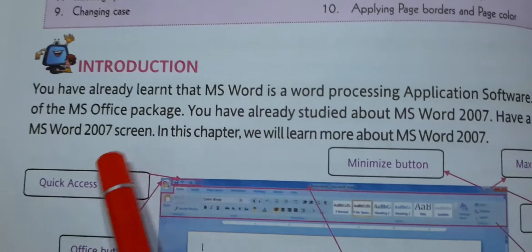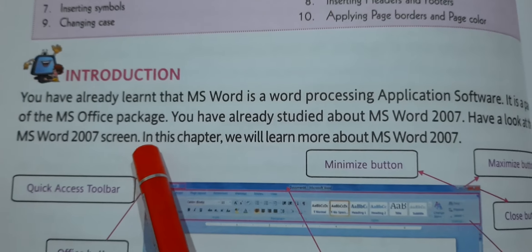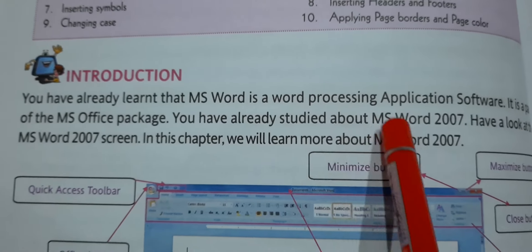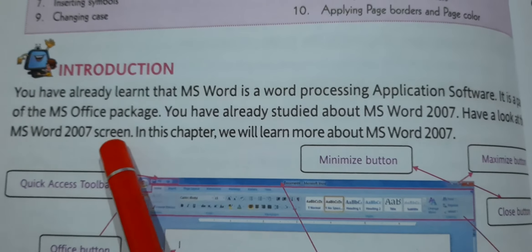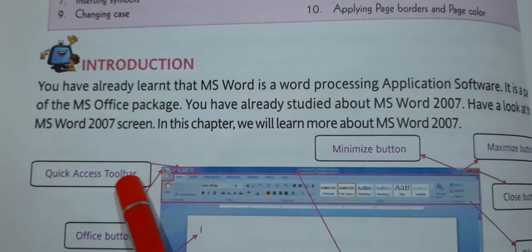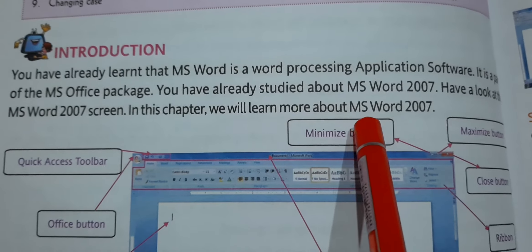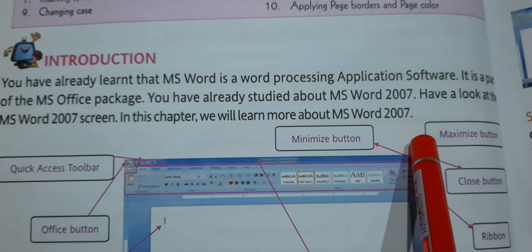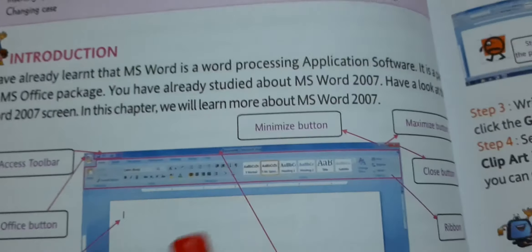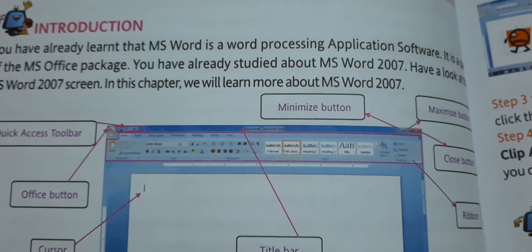MS Word is a part of the MS Office package. You already know that it is a part of MS Office package, along with MS Excel, MS PowerPoint, and MS Access. It is one of the most used applications of the MS Office package. You have already studied about MS Word 2007. Have a look at the MS Word 2007 screen. In this chapter, we will learn more about MS Word 2007 and its screen.